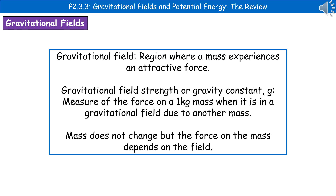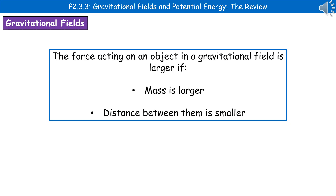When we're talking about the gravitational field strength, or gravity constant, given the abbreviation G, that is the measure of the force on a 1 kilogram mass when it's in a gravitational field due to another mass. One last thing to bear in mind is that the mass doesn't change, but the force on the mass will depend on the field. The force that acts on an object will be larger if the mass is larger or the distance between them is smaller.